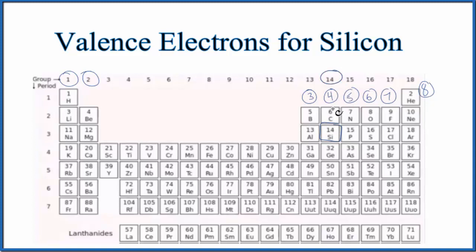So elements in this group like carbon, silicon, they have four valence electrons. So we know from the periodic table that silicon, the silicon atom, has four valence electrons.